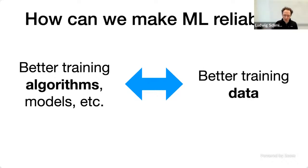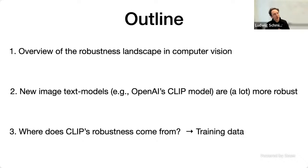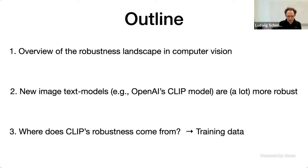Over the past two to three years, my view has shifted more to the better training data perspective. In this talk, I want to tell you about this journey in the context of computer vision. We'll start with a broad overview of the robustness landscape in computer vision as of late 2020, then look at OpenAI's CLIP model from early 2021, which made super exciting progress on robustness benchmarks, and finally talk about future directions around making better pre-training data sets for image-text models.